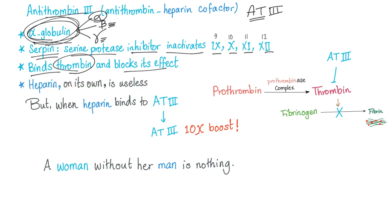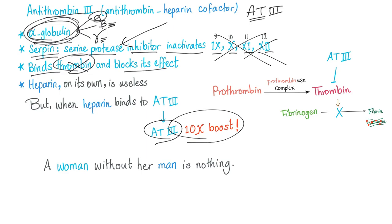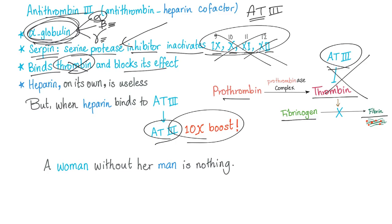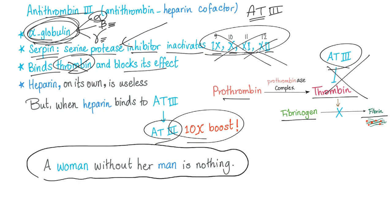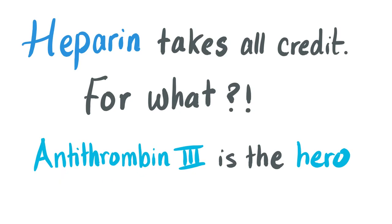Heparin on its own is useless. But when heparin binds to antithrombin 3, antithrombin 3 gets a 10x boost — it becomes super energetic. Antithrombin 3 then binds thrombin to block its effect, inhibits all the serine proteases, and becomes a major anticoagulant. Antithrombin 3 is the true antithrombin. Antithrombin 3 — without it, heparin is nothing. Heparin takes all the credit, but antithrombin 3 is the real hero doing all the work.